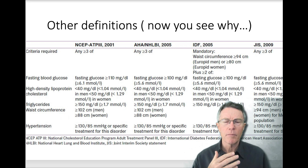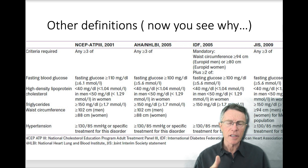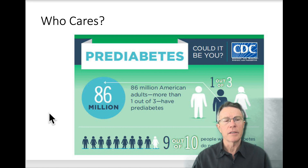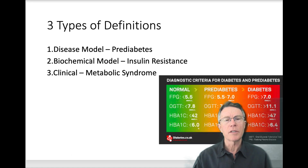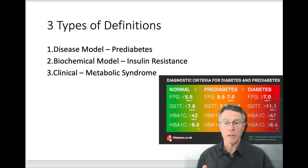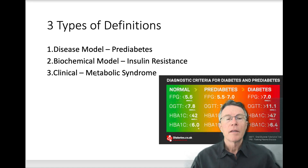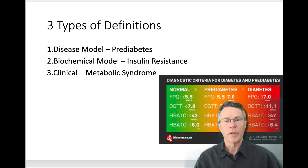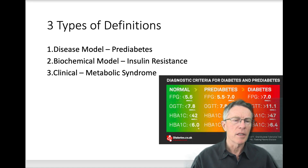My goal is to help people understand this disease process, this biochemical process, what it does to them and what to do about it. Three types of definitions: pre-diabetes is the disease model, insulin resistance is the biochemical model, and metabolic syndrome is the clinical model — more of an old-style term for what doctors were seeing and trying to piece together.